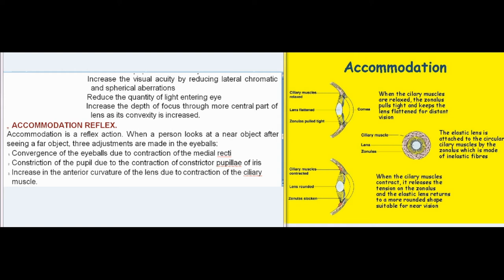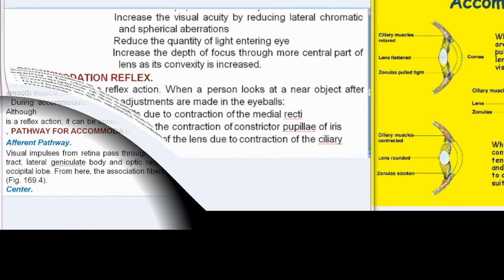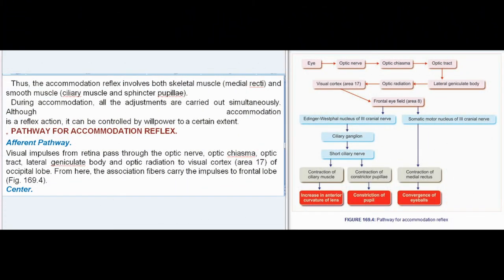Accommodation Reflex: Accommodation is a reflex action. When a person looks at a near object after seeing a far object, three adjustments are made in the eyeballs: convergence of the eyeballs due to contraction of the medial recti; constriction of the pupil due to contraction of the constrictor pupillae of the iris; and increase in the anterior curvature of the lens due to contraction of the ciliary muscle. Thus, the accommodation reflex involves both skeletal muscle (medial recti) and smooth muscle (ciliary muscle and sphincter pupillae). All adjustments are carried out simultaneously, and although accommodation is a reflex action, it can be controlled by willpower to a certain extent.